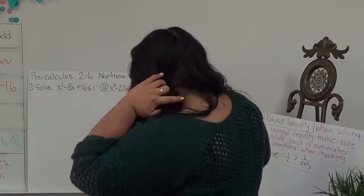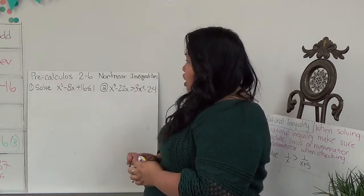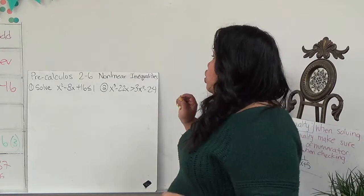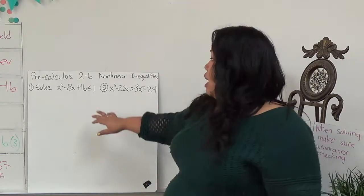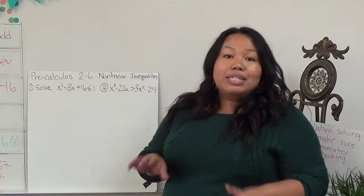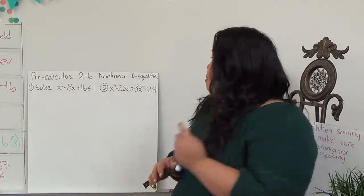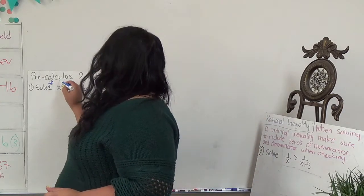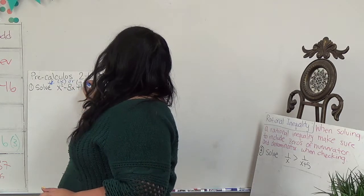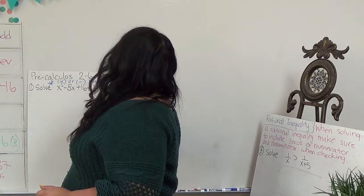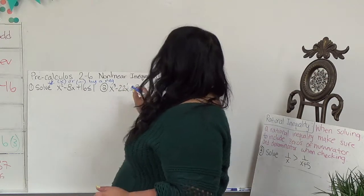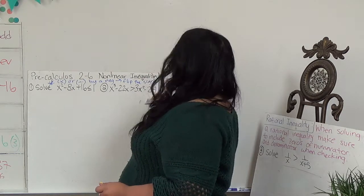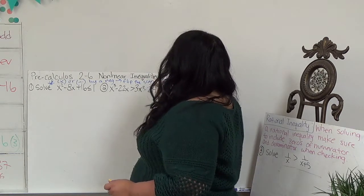In Pre-Calculus Section 2.6, we're dealing with inequalities. All of these you were able to solve in previous sections with an equal sign. The rules of inequalities are the same as the equal sign. There's only one big thing: if or when I multiply or divide by a negative, I need to flip the sign. I treat it just like an equal sign.